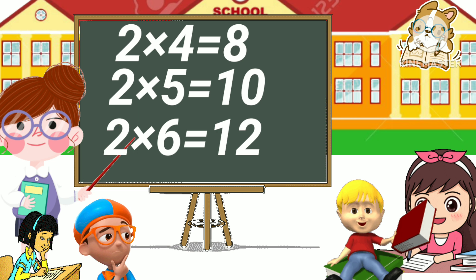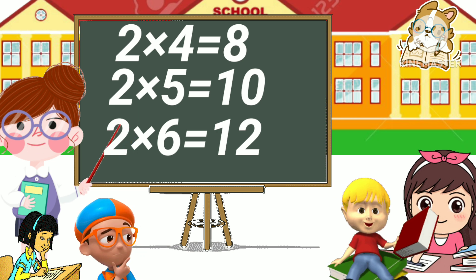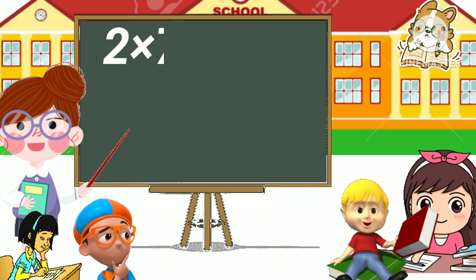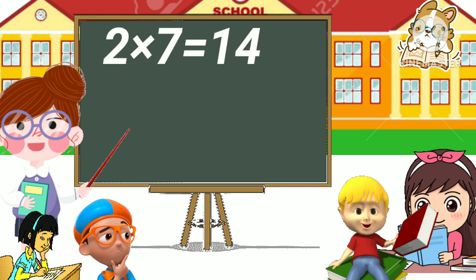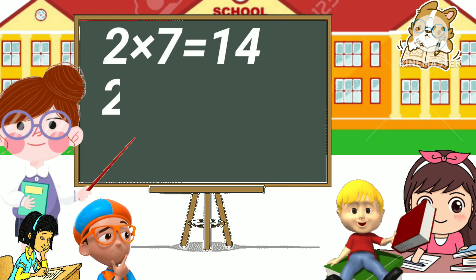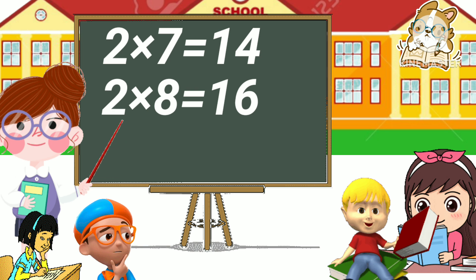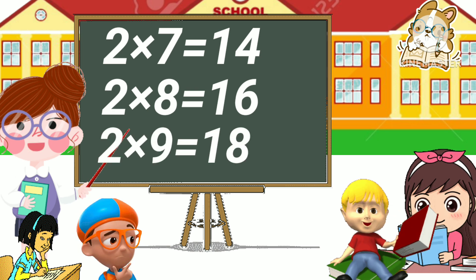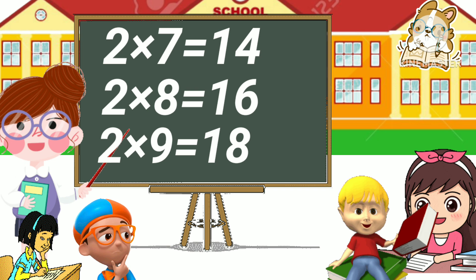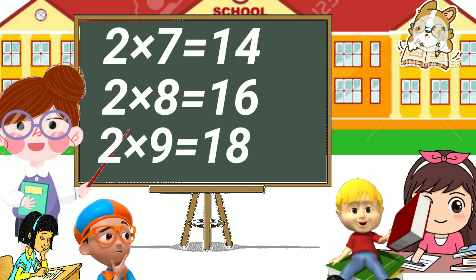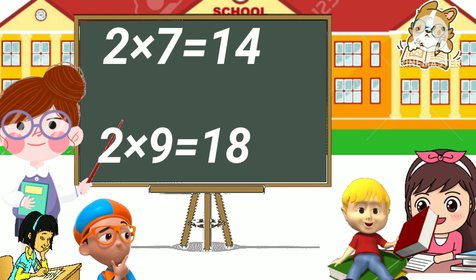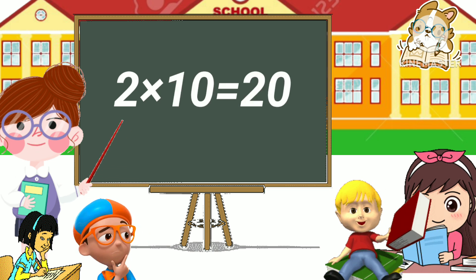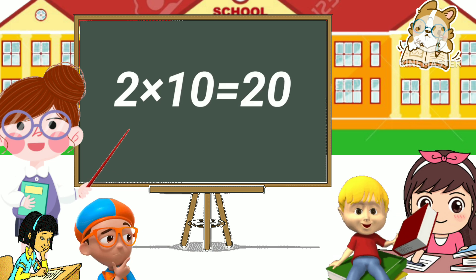Two seven has fourteen, two eight has sixteen, two nine has eighteen, two ten has twenty.